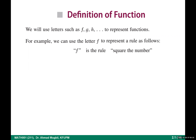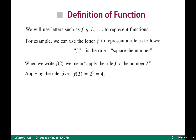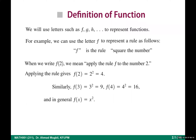If the rule says 'square the number,' then applying f to 2 gives f(2) = 2² = 4; f(3) = 3² = 9. In general, this function is written as f(x) = x², where x can be any real number. This is a function that depends on x — if you have x, you can square it.